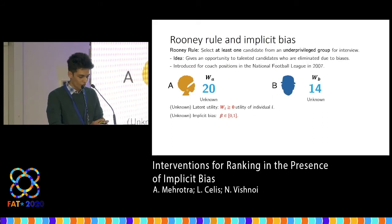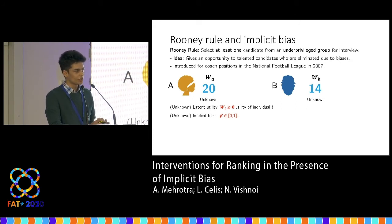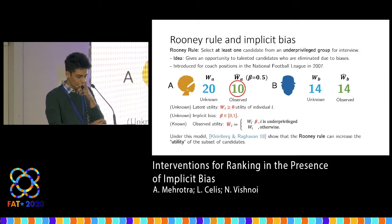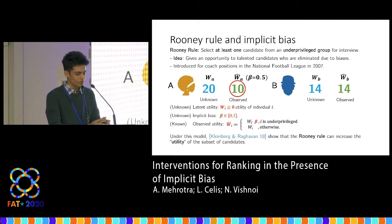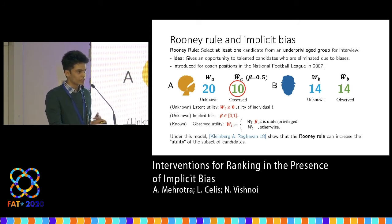We consider a model of implicit bias introduced by Kleinberg and Raghavan. Suppose we have two individuals A and B with utilities 20 and 14. If you knew these utilities, it's clear that we'd choose the left individual over the right one. But you only see a biased version of these utilities, where for a fixed factor beta between 0 and 1, we reduce the utility of the underprivileged candidates by this factor. In this example, we reduce the utility of the left candidate from 20 to 10. So in the absence of any interventions, we end up choosing the less talented right candidate over the more talented left one — which is also bad for the hiring committee because they're losing out on good candidates.